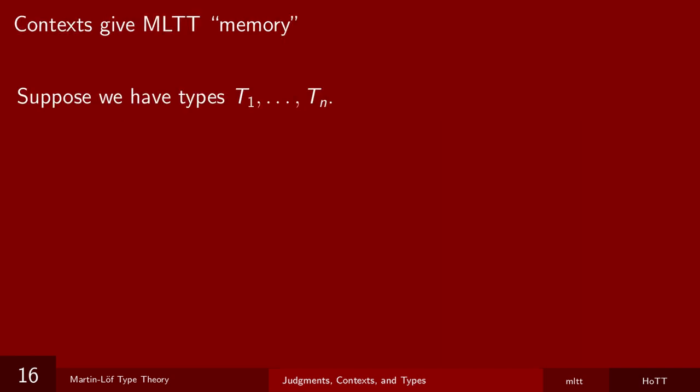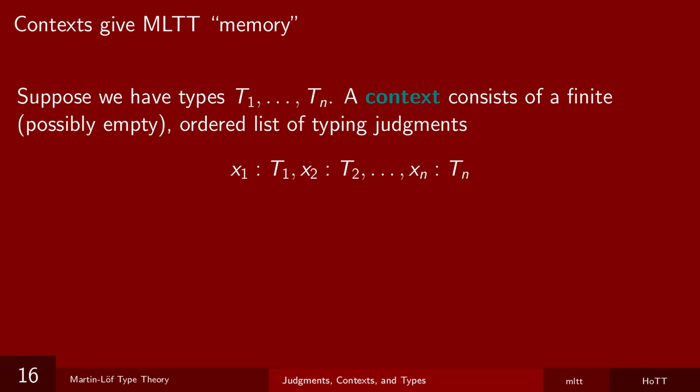So let's define contexts. A context consists of a finite list of typing judgments. Here, T1 through TN are types, and X1 through XN are distinct variables. It's important to note that the order matters. Rearranging the judgments results in a different context. So what we're doing here is asserting a bunch of variables are of certain types. In programming types, this is usually a basic mechanism of the language, declaring type variables.